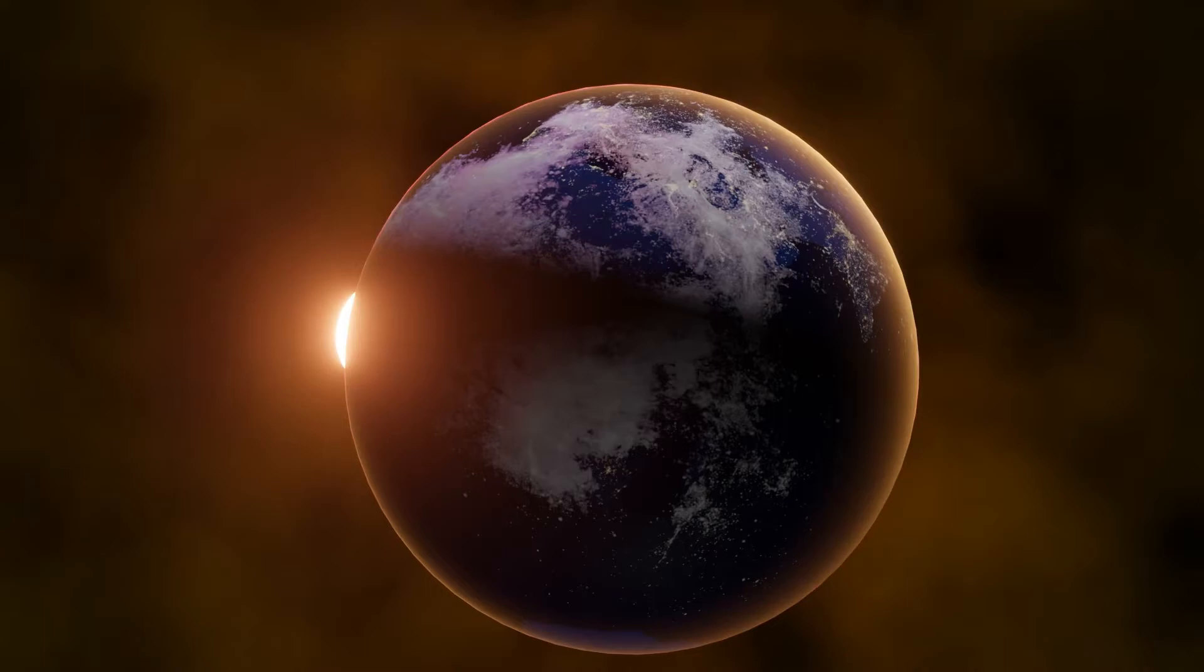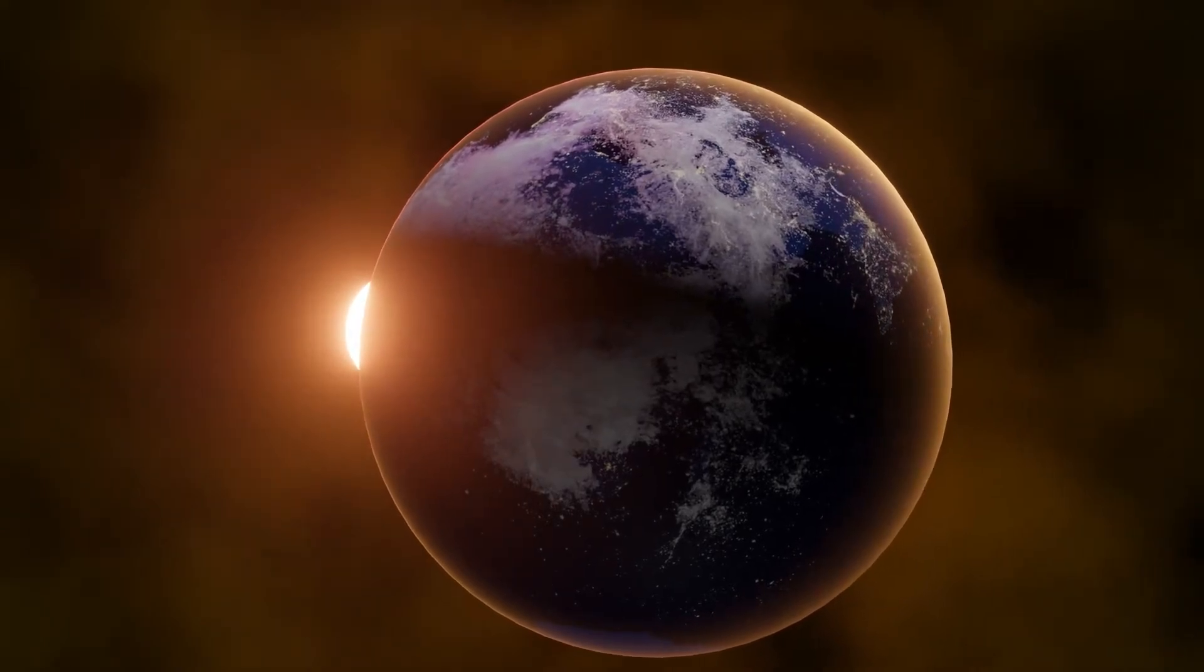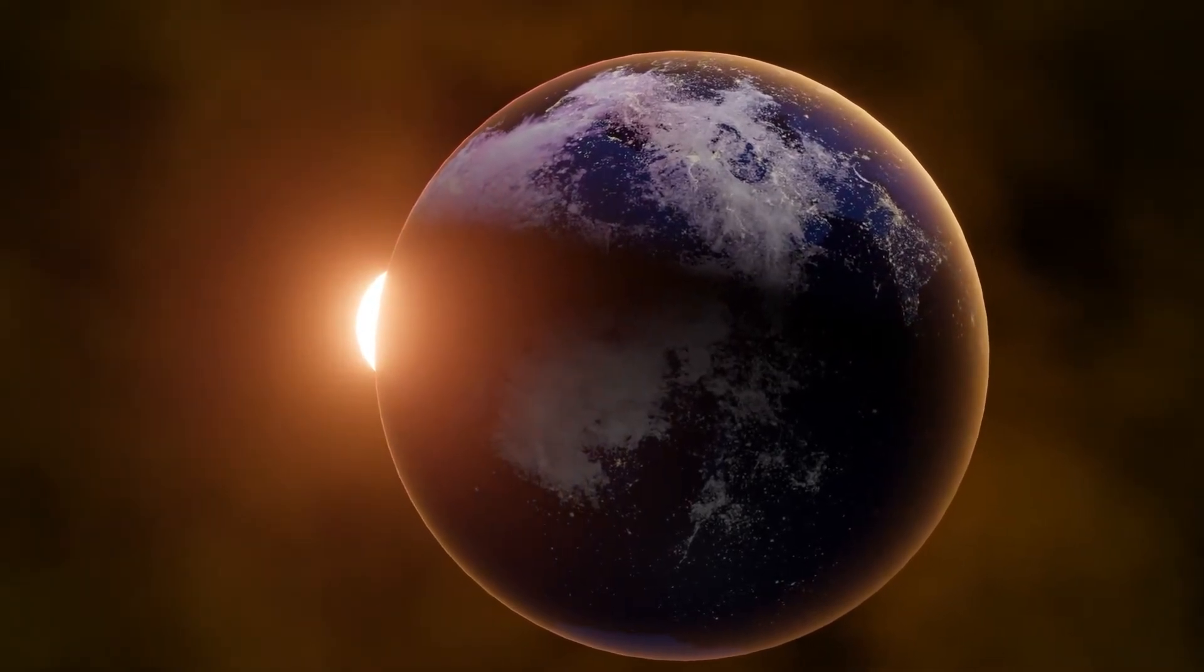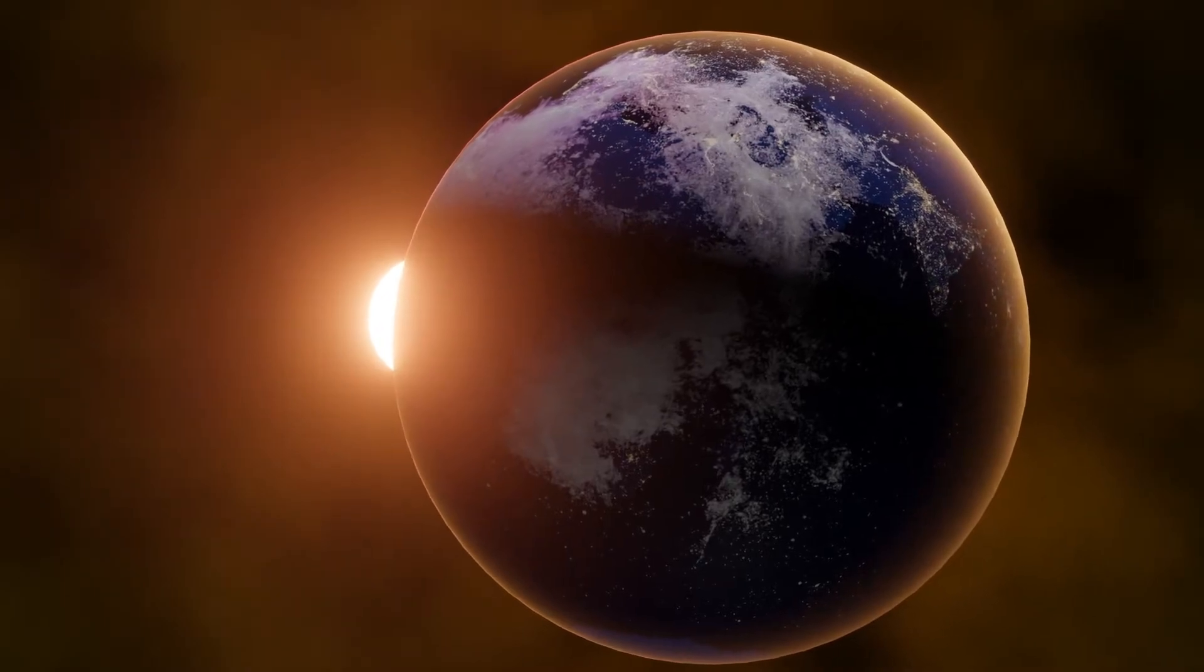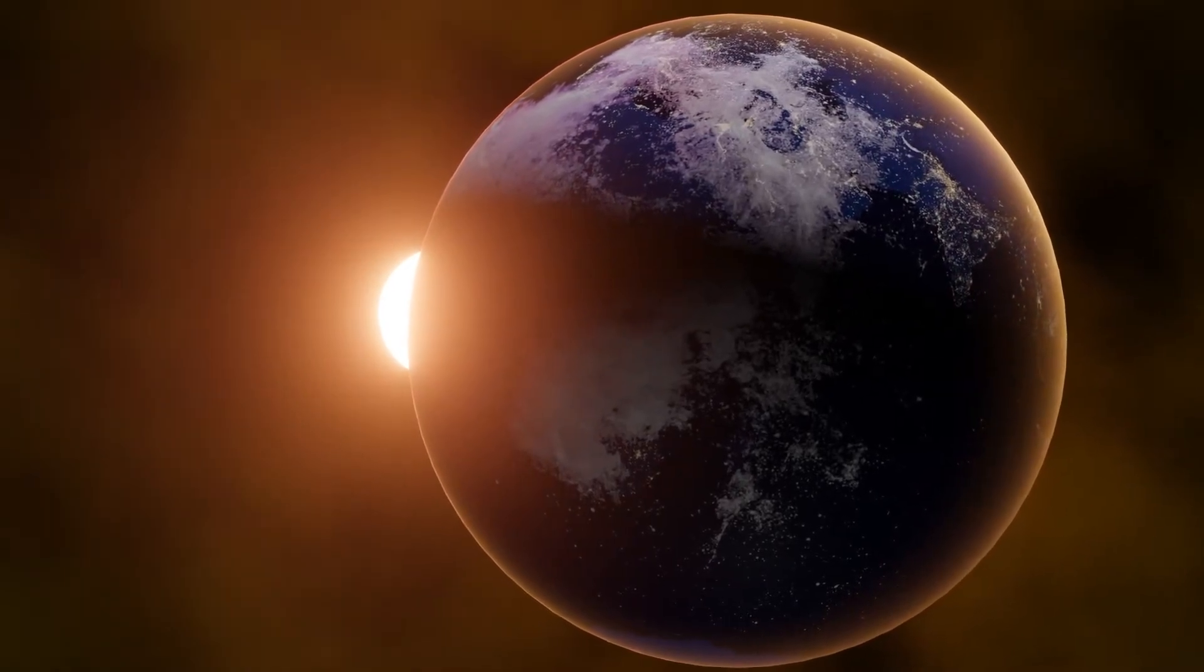But because Gliese 12b orbits so close to its star, it gets enough heat to maintain temperatures that might be suitable for liquid water, a key ingredient for life.